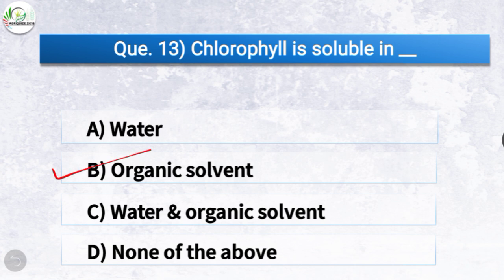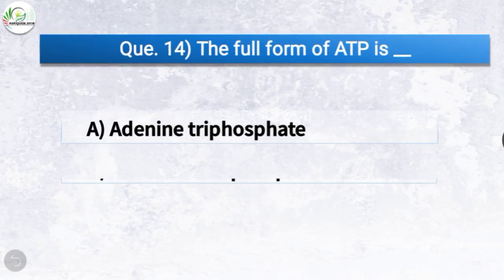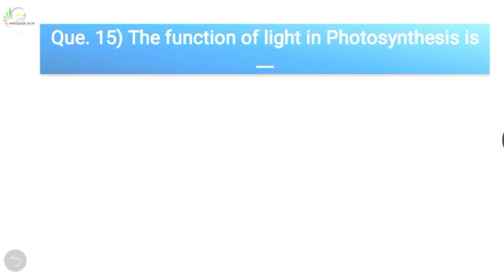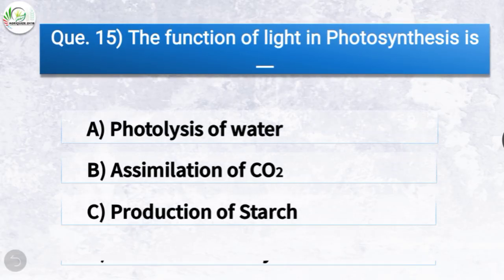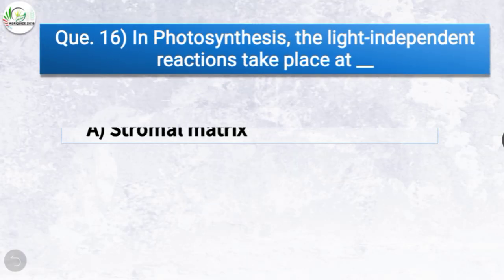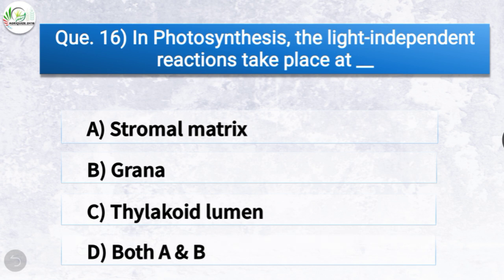Question 13: Chlorophyll is soluble in what? Options: water, organic solvent, water and organic solvent, or none of the above. The correct answer is option B — organic solvent. Question 14: The full form of ATP is what? Options: adenine triphosphate, adenosine triphosphate, adenine trinucleotide, or adenine trimax. The correct answer is option B — adenosine triphosphate. Question 15: The function of light in photosynthesis is what? The correct answer is option A — photolysis of water.